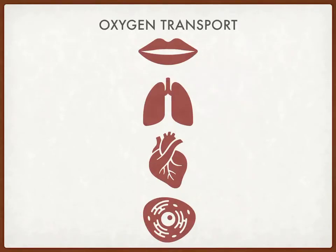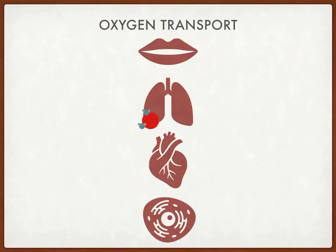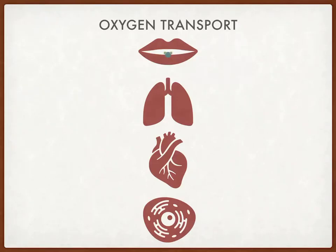From here, we transport it back up to the heart, goes to the right side of the heart, and then we know it goes to the lungs. Here, the CO2 is released from the hemoglobin, crosses back into the alveoli, and we exhale that out.